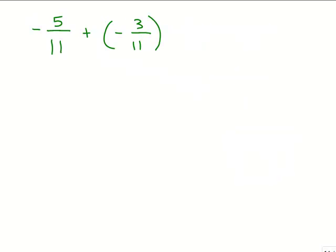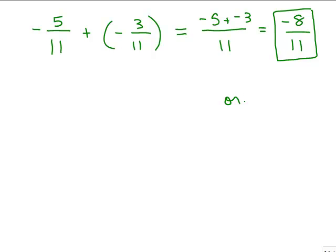Here's one for you to try: negative 5 elevenths plus negative 3 elevenths. It has a common denominator, so we know it's going to have 11 in the denominator. The minus sign goes with the numerator, so that's negative 5 plus negative 3, which is negative 8 elevenths. You can write your answer with a negative 8 in the numerator or put the minus sign in front of the fraction bar. It's not a good idea to put the negative in the denominator — you'll usually see negative fractions written with a minus sign in front of the fraction bar or in the numerator, keeping the denominator positive.